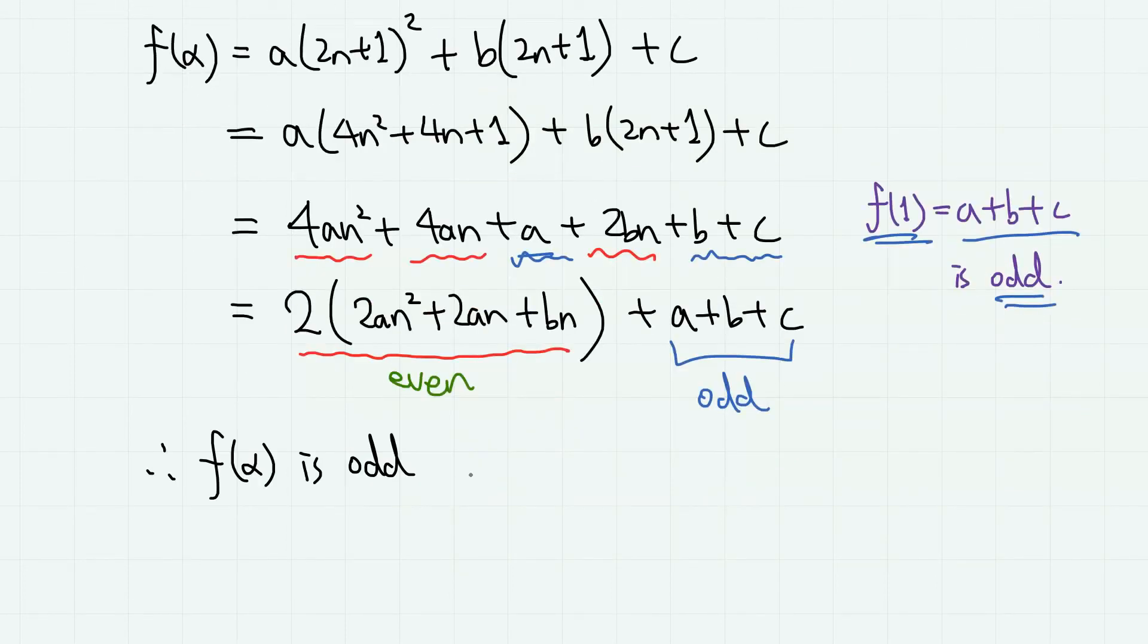Therefore, f(alpha) is also odd here, and thus cannot be 0, hence we have another contradiction.